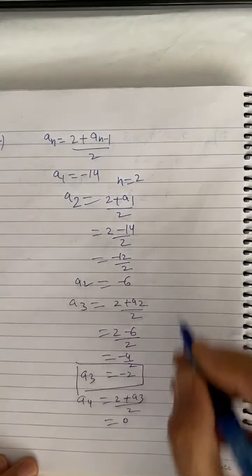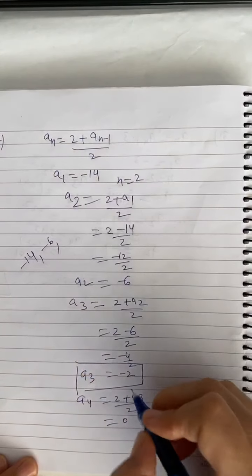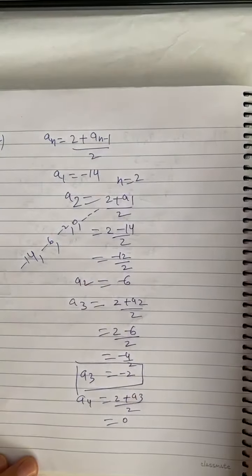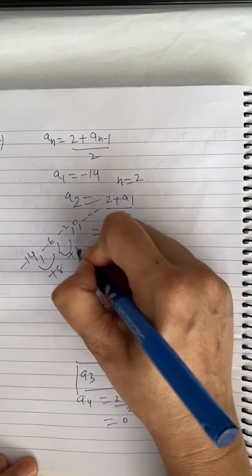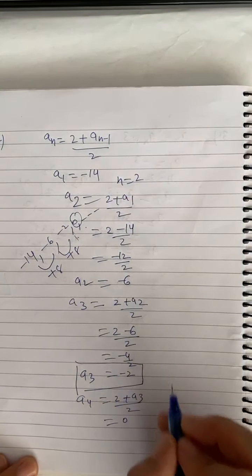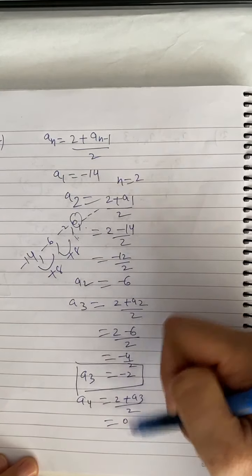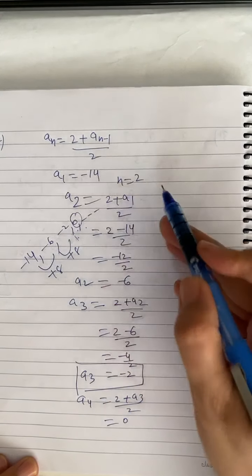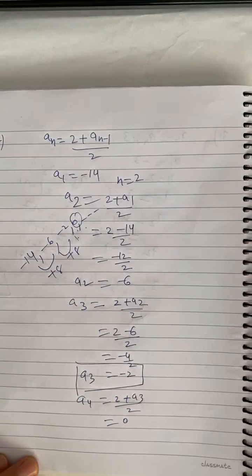For a4: a4 = (2 + a3) / 2 = (2 + (-2)) / 2 = 0. So the sequence looks like -14, -6, -2, 0. Checking for a pattern: the differences are +8, +4, +2 — so it's not a constant pattern. If no clear pattern emerges, you need to keep applying the recursive rule step by step until you reach the 10th term.